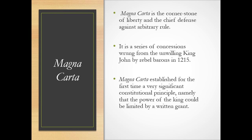Magna Carta is the cornerstone of liberty and the chief defense against arbitrary rule. It is a series of concessions wrested on the field of battle from the unwilling hands of King John by his rebel barons in 1215. It established for the first time a very significant constitutional and written legal principle — namely, that the power of the king could be limited by a written grant. So we're starting in 1215 and beginning to understand: 1776, our Founding Fathers, due process, taxation without representation — it's directly related, it's directly linked. 1215 is informing our founding generation in the voice of the Declaration.